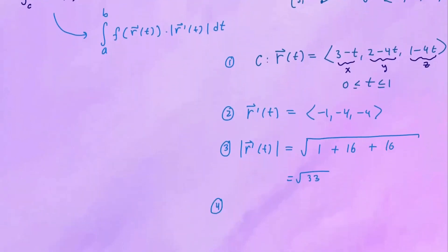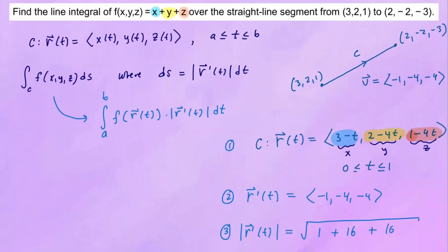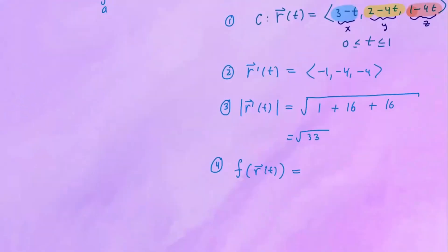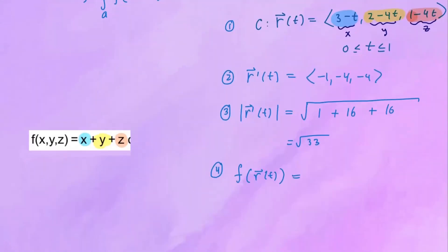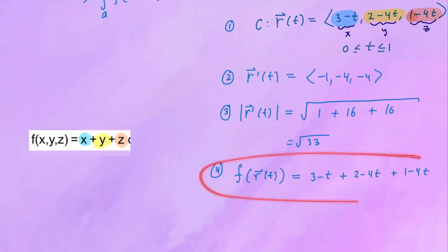Now we evaluate F at R of T by substituting each component into F of X, Y, Z. We replace X with 3 minus T, Y with 2 minus 4T, and Z with 1 minus 4T. So F of R of T becomes 3 minus T plus 2 minus 4T plus 1 minus 4T. That's what we get when we sub the parametrization into our function F. Now we're almost ready to integrate.